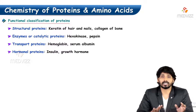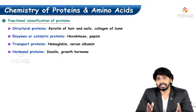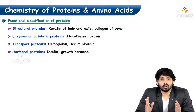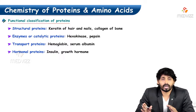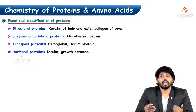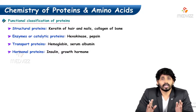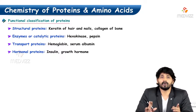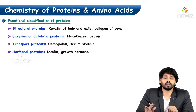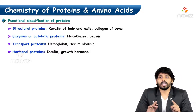Third, transport proteins — they transport something. Hemoglobin is the classical example: it carries oxygen from the lungs to the cells, and CO2 from cells to the lungs. Serum albumin carries lipid substances or insoluble substances useful to us through the circulation.